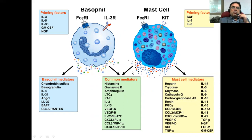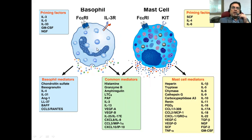Basophils and mast cells — some people confuse them because of the similar types of mediators, common mediators that these two cells are secreting. But there are lots of differences morphologically, chemically, and functionally. You can see here that morphologically, these cells are different from each other. If you look at the number of granules inside them, or the structure of the nucleus, they are different.